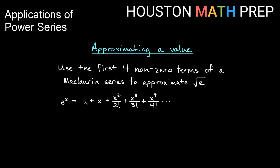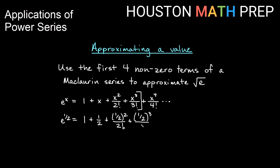Here's our McLaurin series for e to the x: 1 plus x plus x squared over 2 factorial plus x cubed over 3 factorial, etc. The square root of e, if we think of it in terms of e to the x, is the same as e to the 1/2 power. We'll cut off after the x cubed term — that's the fourth non-zero term. So we get 1 plus 1/2 plus (1/2) squared over 2 factorial, then (1/2) cubed over 3 factorial. That gives us 1 plus 1/2, then 1/4 divided by 2 is 1/8, then 1/8 divided by 6 is 1 over 48.